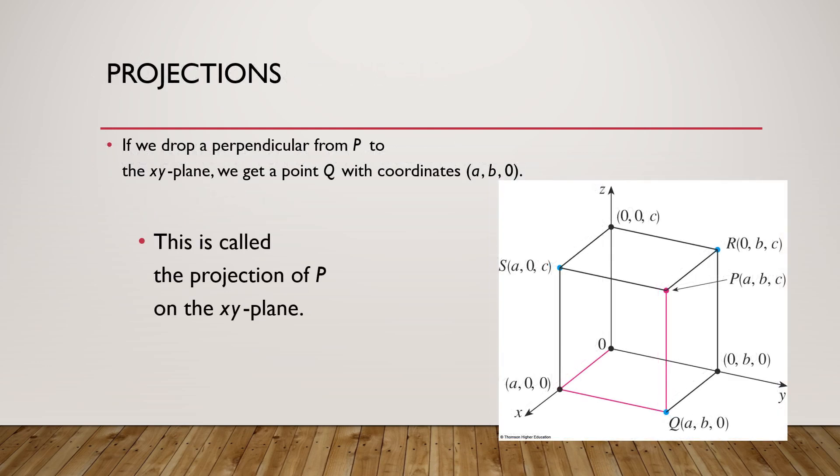We can also define the perpendicular of point P at any axis as its projection. Let's say, if we draw a perpendicular from point P on the x-y plane, and then we reach the point Q, that is, A, B, and 0. This is the projection of P on x-y plane.